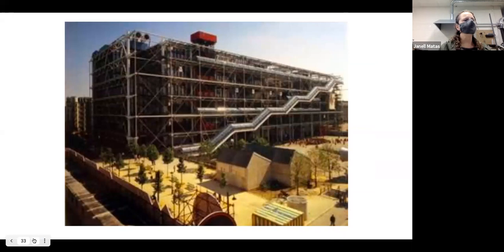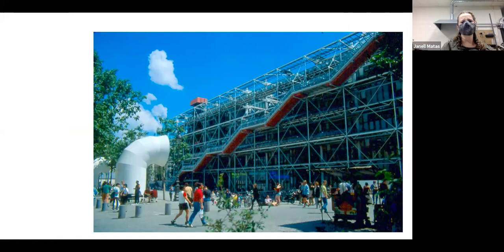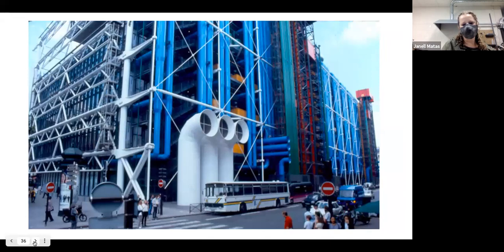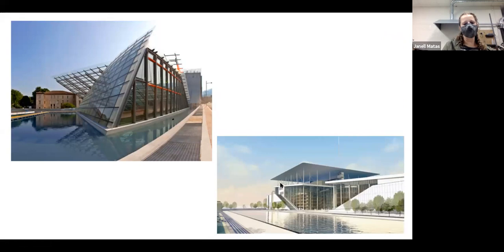This is the Pompidou Centre in Paris by Renzo Piano. It's a great example of seeing the inner workings of a structure on the outside of the building — all color-coded, so red is for movement of people, green for ventilation, and blue for water. It's reminiscent of the Crystal Palace where you can see the inner workings from the outside. Renzo Piano also designed the modern wing addition at the Art Institute of Chicago.